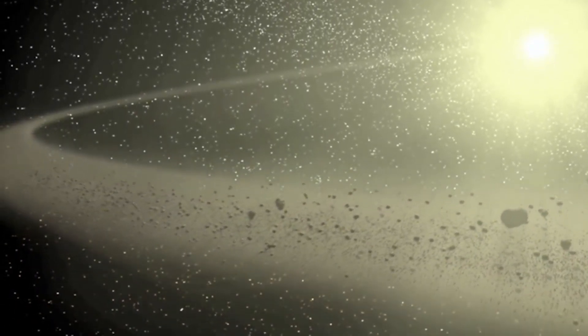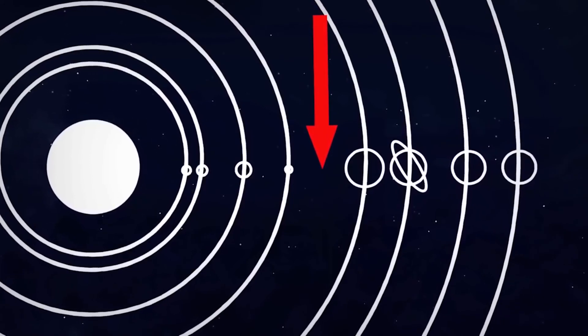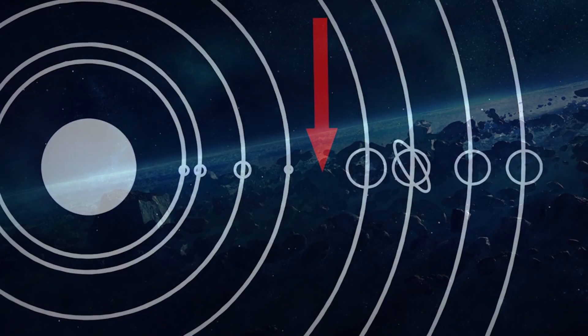Most asteroids can be found in the asteroid belt, a region between Mars and Jupiter. The belt is made up of countless rocks that never came together to form a planet, due to the gravitational pull of Jupiter.